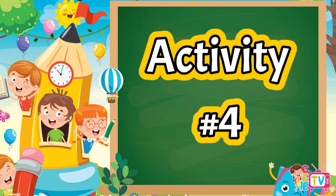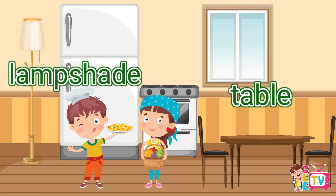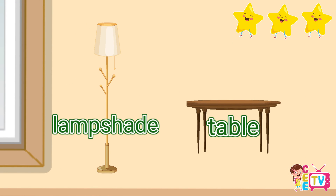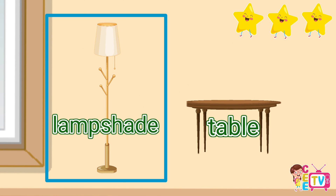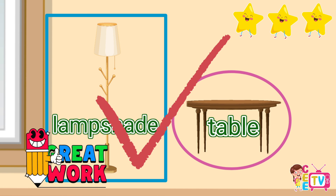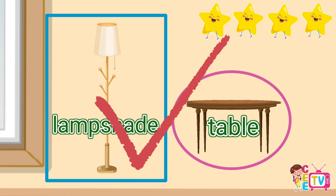Activity number four: Box the tall object and circle the short object. I will box the lampshade because it is tall, and I will circle the table because it is short. That is correct! Here is your fourth star! Yay!